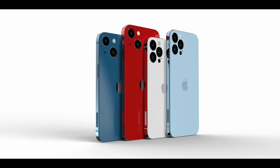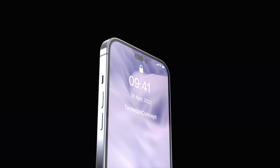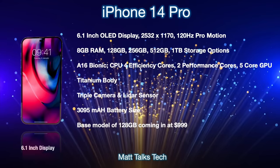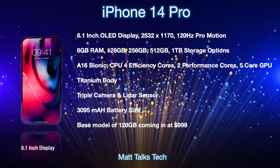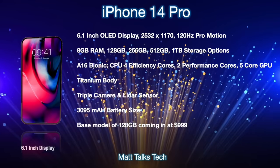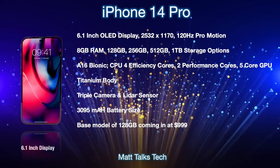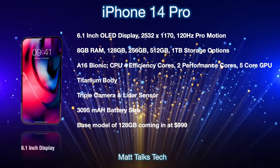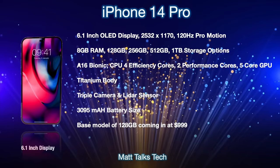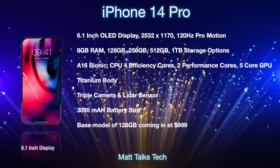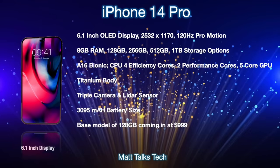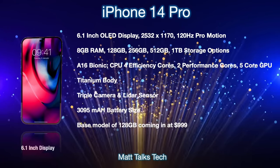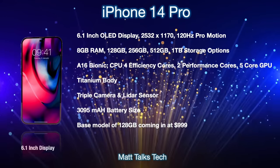Here's the full summary of the iPhone 14 Pro specs. It features a 6.1-inch OLED display with a resolution of 2532 by 1170 and a 120Hz ProMotion display. The notch will be dropped for the Pro models, likely replaced with a hole-punch or pill design — though the exact look isn't confirmed. Under the hood, it will have 8GB of RAM, storage from 128GB up to 1TB, and the A16 Bionic chip with four efficiency cores, two performance cores, and a five-core GPU.